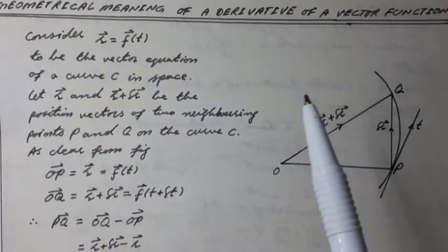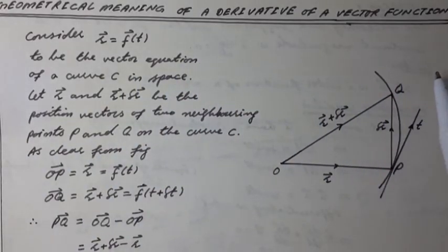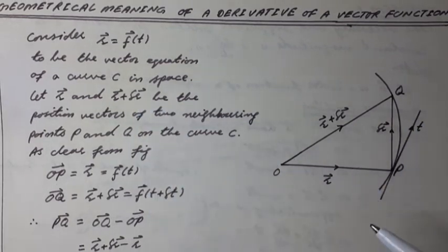Geometrical meaning of a derivative of a vector function. Consider R vector equal to F vector of t to be the vector equation of the curve C in space as shown in figure.